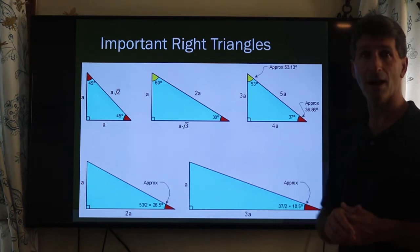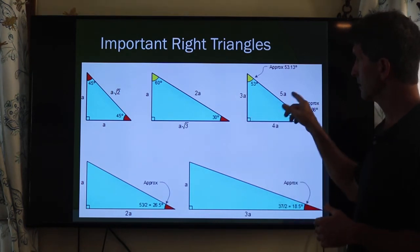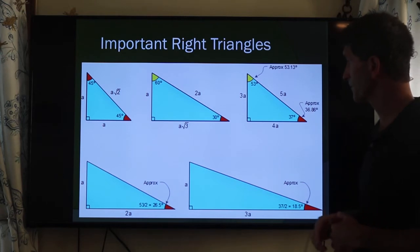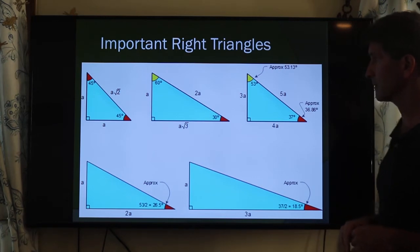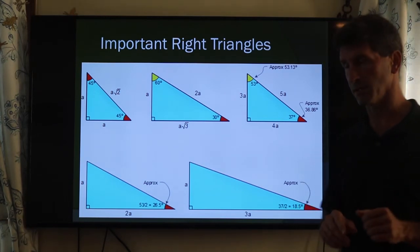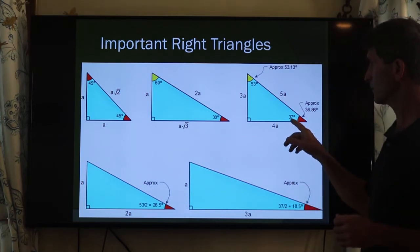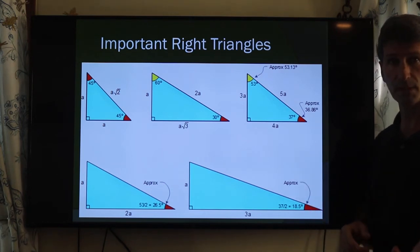Another one is the 3-4-5 triangle where you look at the ratio of the sides. This is three to this four to this five. You know, memorizing these angles is a little bit difficult. 37 and 53 are approximately the angles right there.